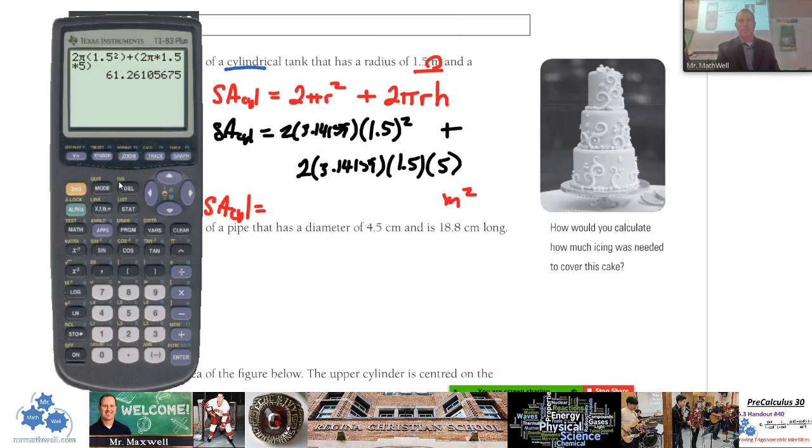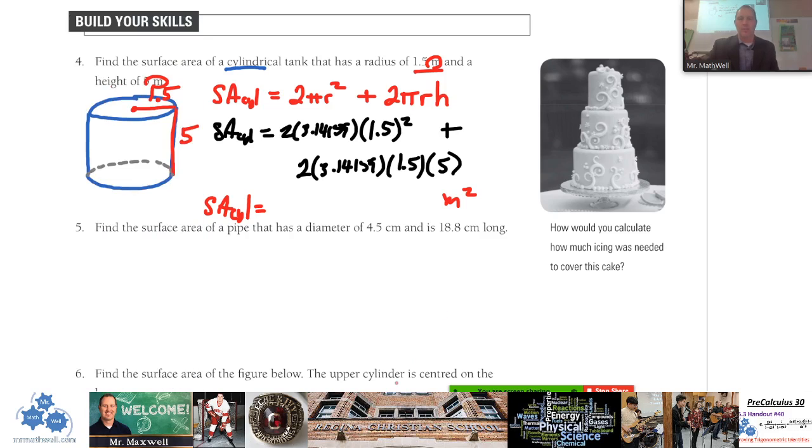So I just did this on my calculator here, and if you want to do it all at once you can, just be real careful with your brackets and stuff like that. You can do this first one, write the number down, then do the second one, write the number down and add them. But you should get something like 61.26, 61.26 meters squared. If you round it out to 61.3, that's perfect, it's fine too.